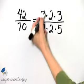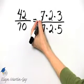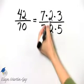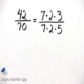And now you can see there's a common factor of 7 in numerator and denominator, common factor of 2 in numerator and denominator.